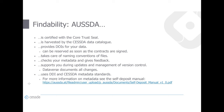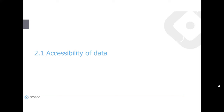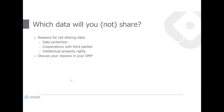The second aspect of FAIR data is accessibility. The main questions to ask yourself are: which research data will you share, and which will you not share? Reasons for not sharing data could be data protection regulations, cooperations with third parties like commercial enterprises, and intellectual property rights. In the social sciences, data protection is the most common reason, and Lisa will cover these aspects in her presentation.